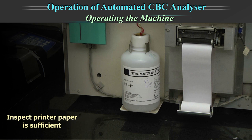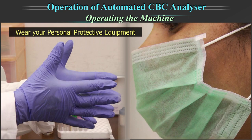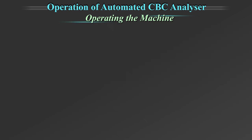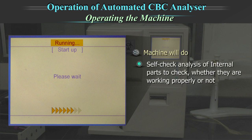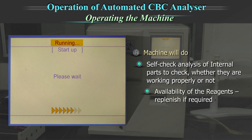Inspect if the printer paper is sufficient for the day's print. Wear your protective equipment. Standard precautions are to be exercised at all times while handling samples, equipment, sampling and maintenance. Switch on the machine. The start-up process begins and usually takes 4–5 minutes. During start-up, the machine will do a self-check analysis of internal parts to check whether they are working properly, check availability of the reagents, replenish if required, and perform any scheduled maintenance.